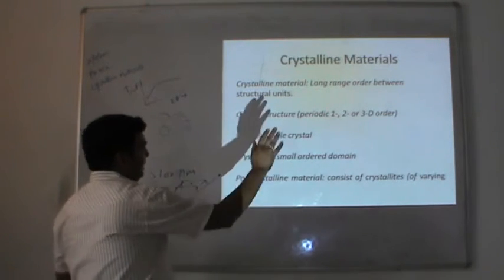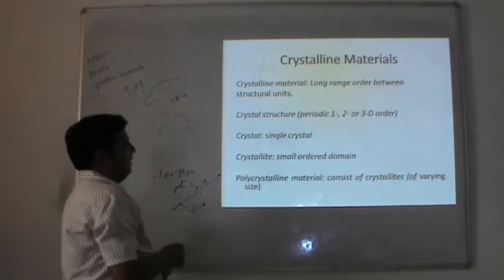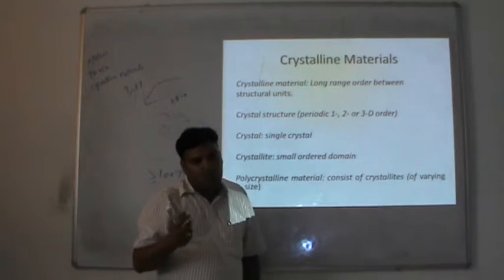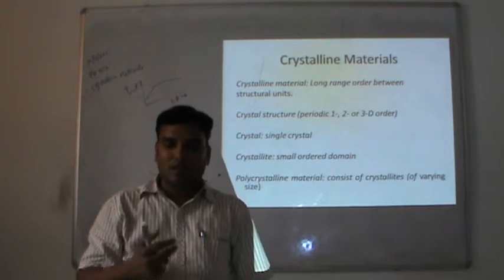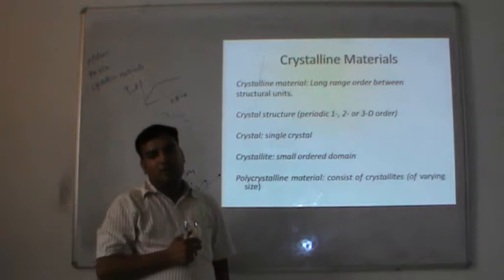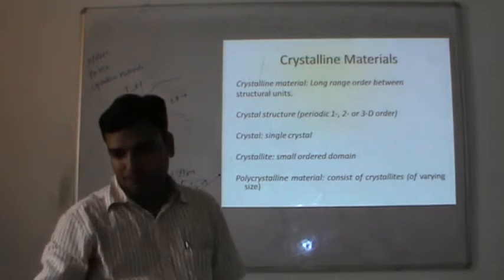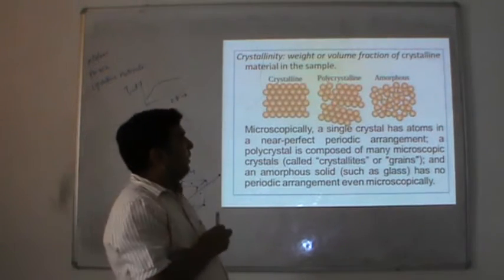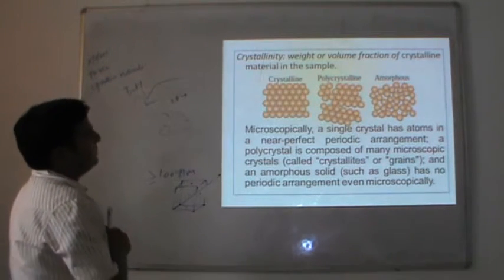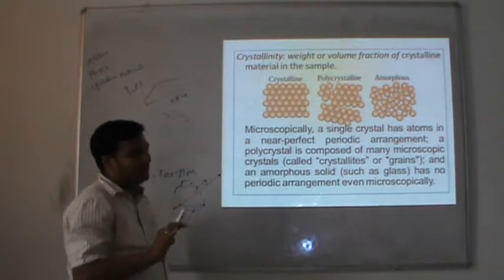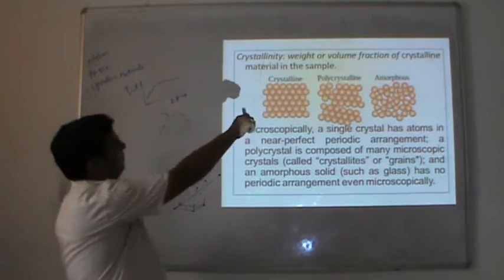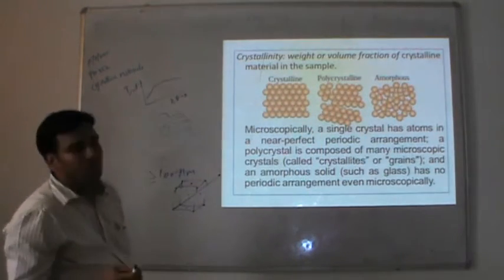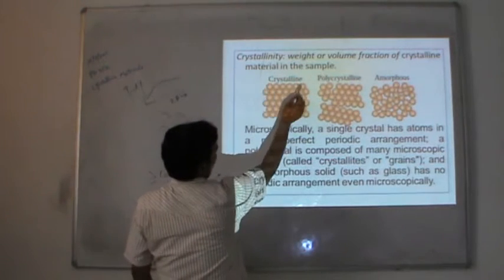Crystals are basically single-crystal materials with a small-order domain where properties can be defined very easily. The last property: a polycrystalline material consists of crystallites of varying size. The weight or volume fraction of crystalline material in a sample is known as crystallinity.